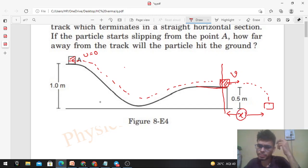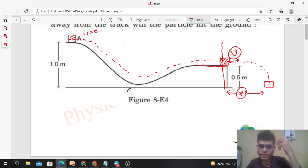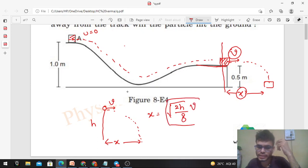If somehow we can find out the value of v, the speed with which the particle will leave the track, then this is a projectile motion question. When you project a particle horizontally with some speed v from height h, how far will it hit the ground? Simply time of flight into speed.